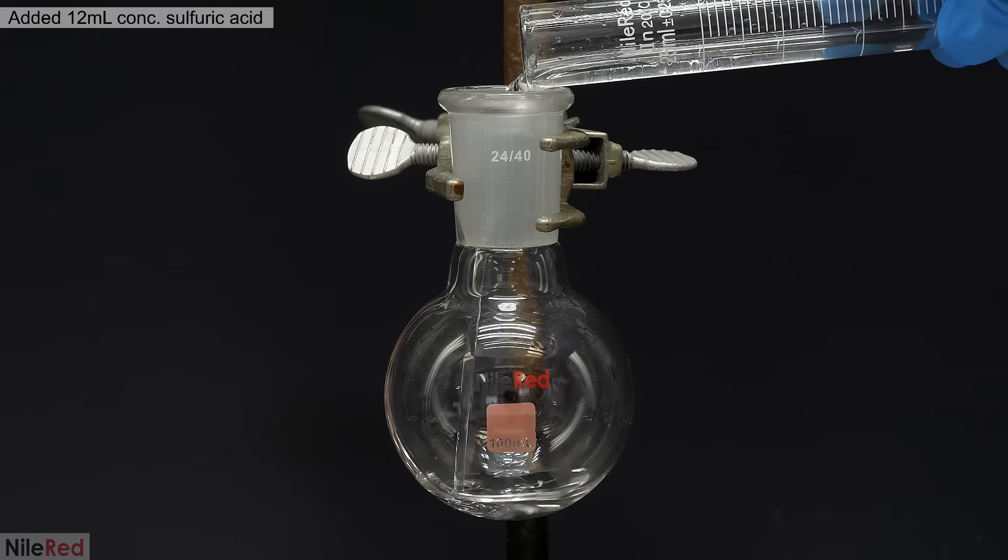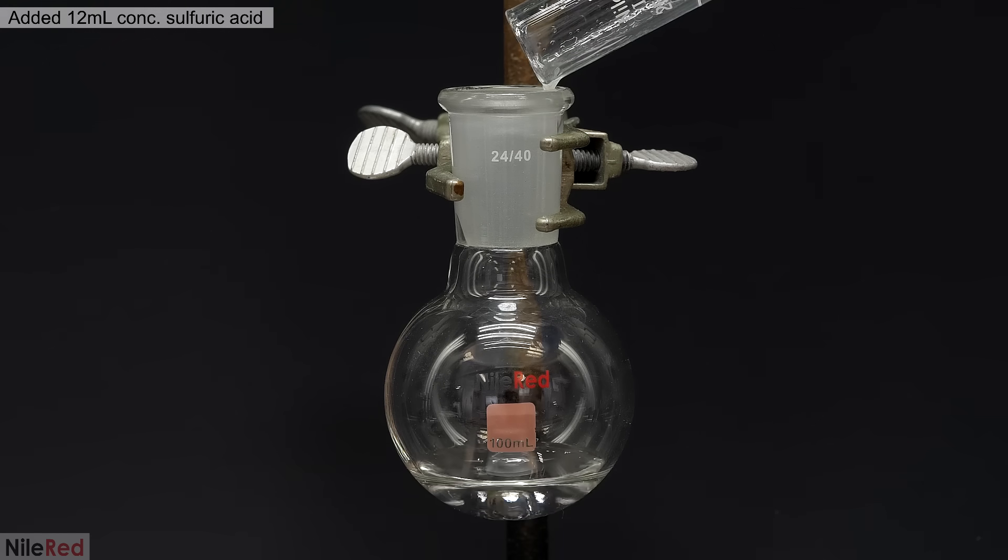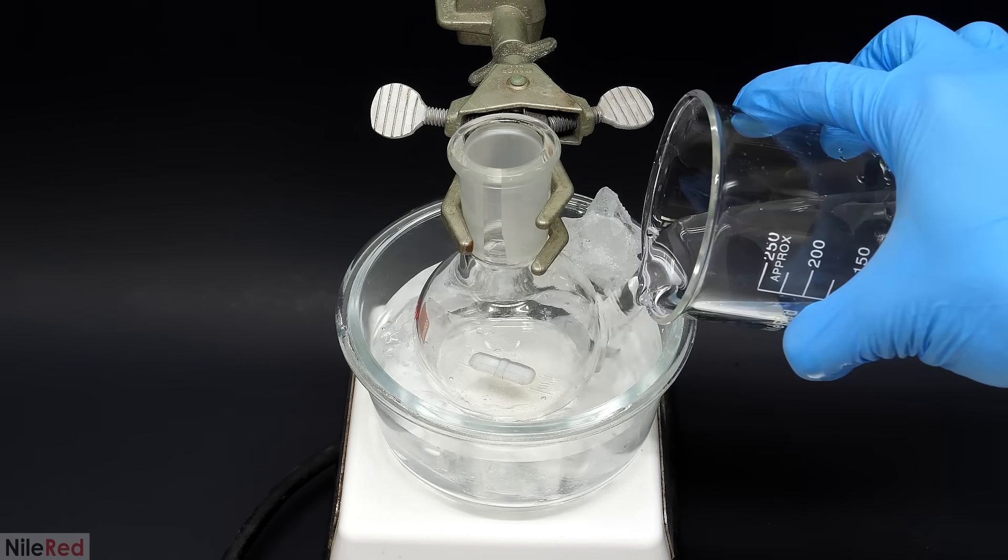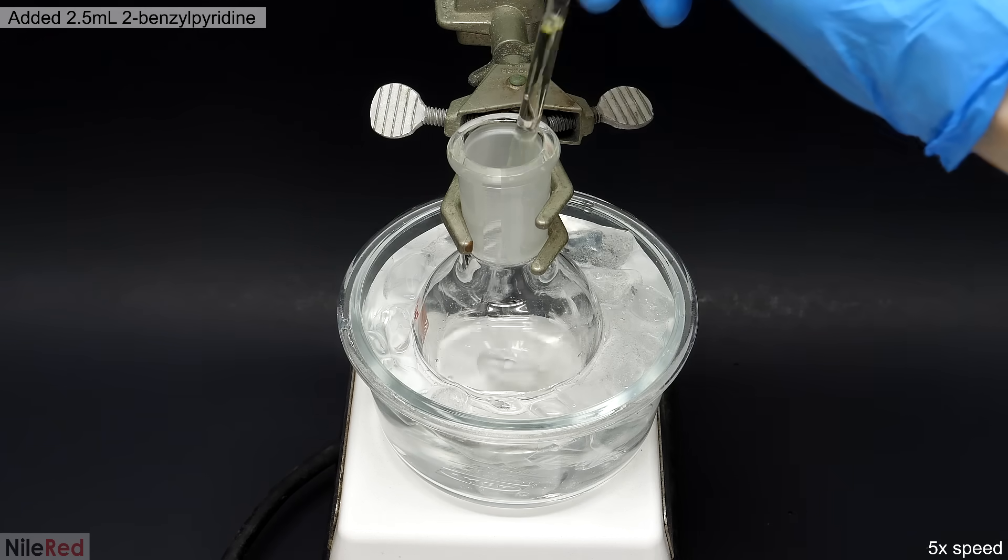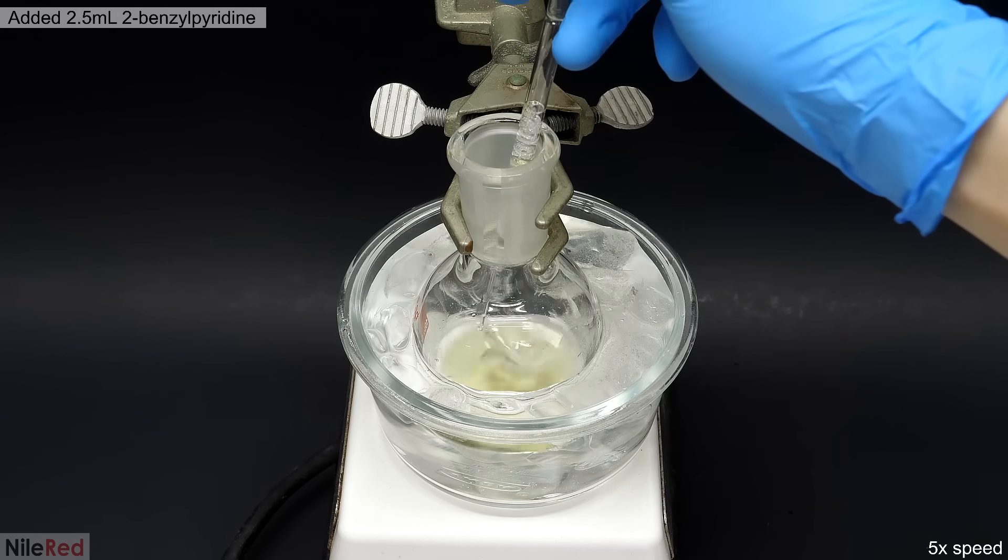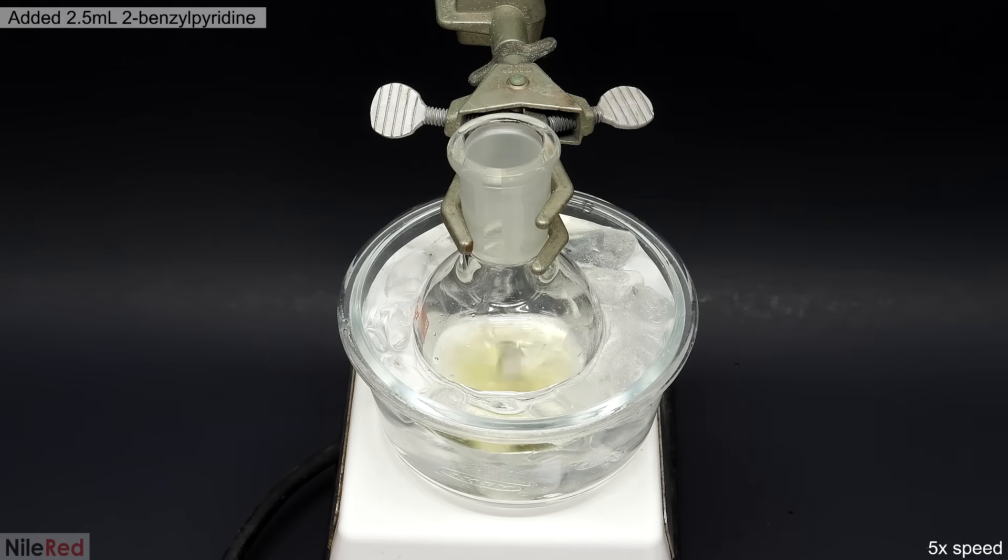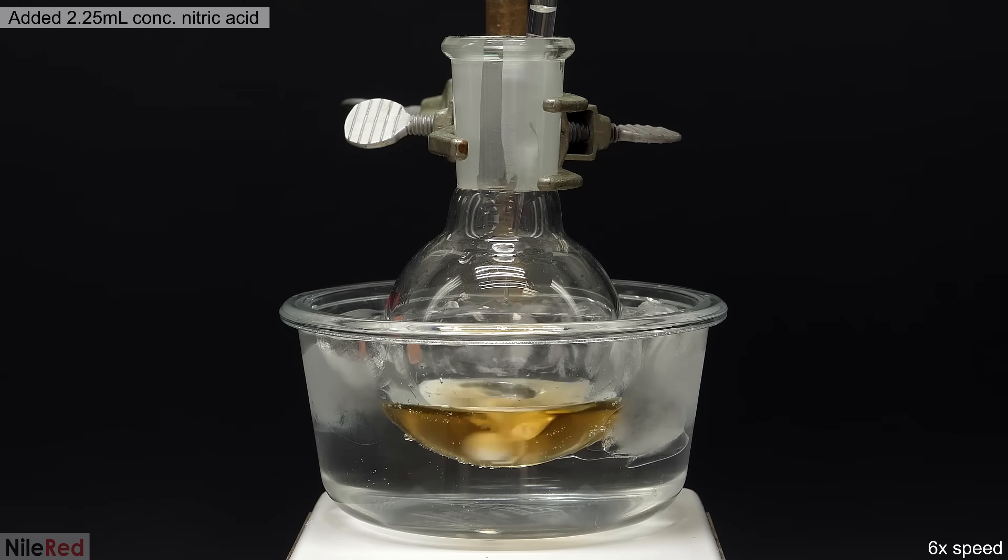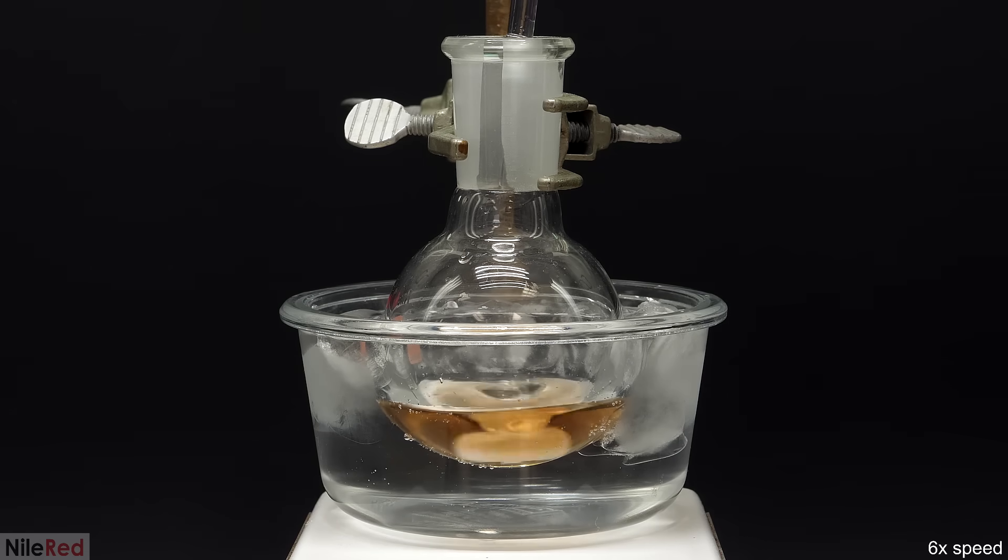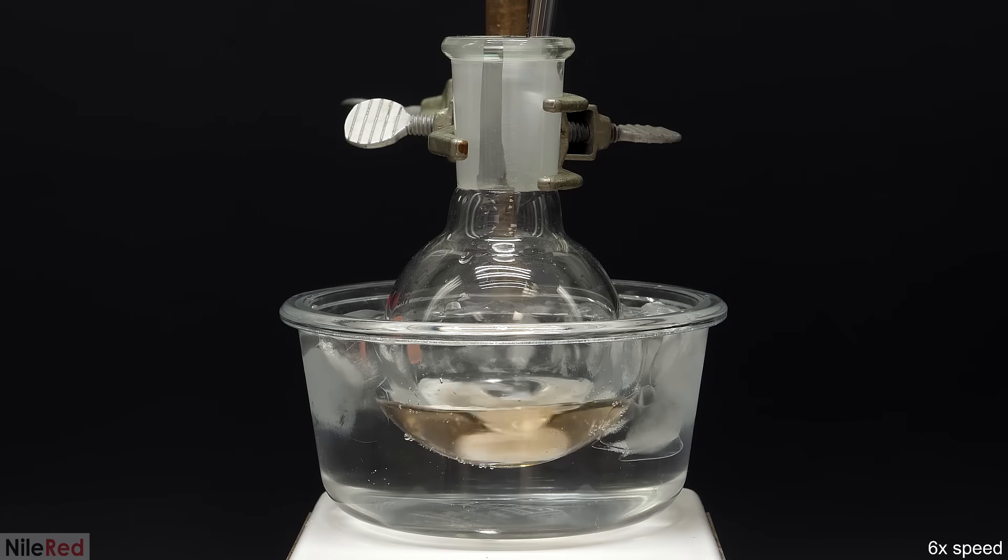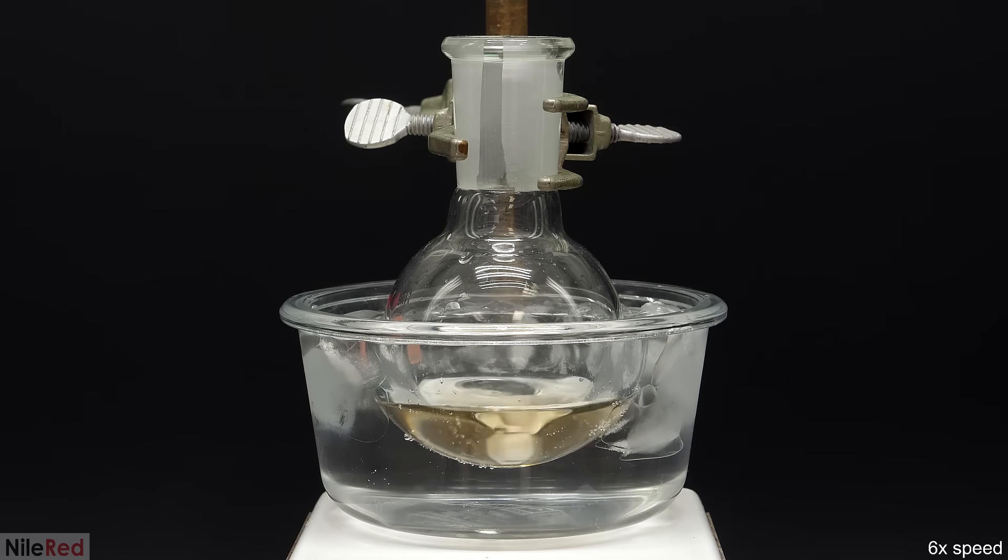To start things off, I added 12 mils of concentrated sulfuric acid and a stir bar to a small flask. Then I set up an ice bath, and I let it cool to around 5°C. To the acid, I slowly added 2.5 mils of 2-benzalpyridine, and a faint yellow color appeared. I let this stir for a few minutes, and then I added 2.25 mils of concentrated nitric acid. This entire addition was done carefully and drop-wise over the course of about 4 minutes. During this time, it went through a range of colors, but by the end, it was pretty much colorless.